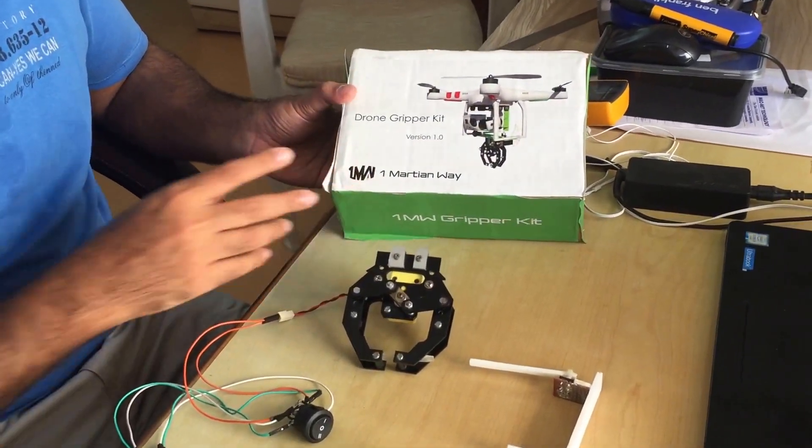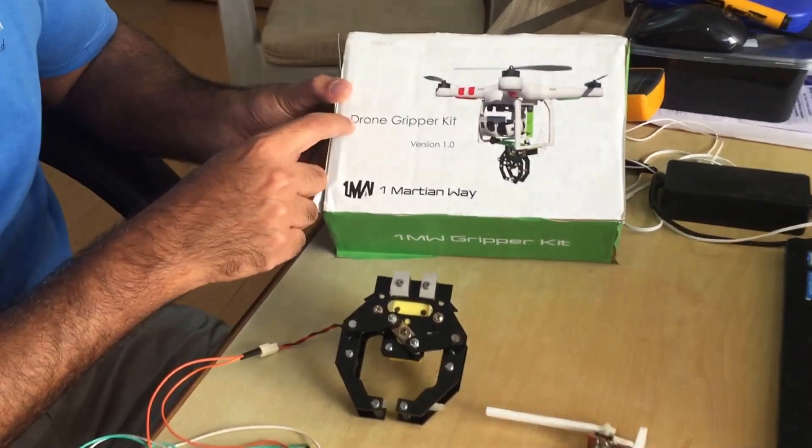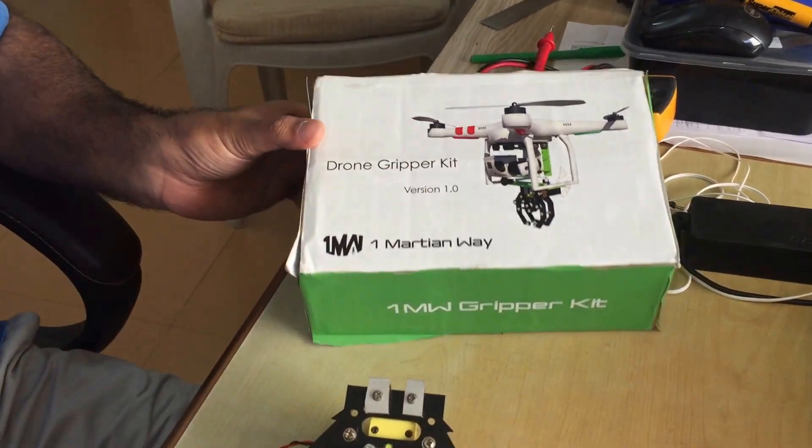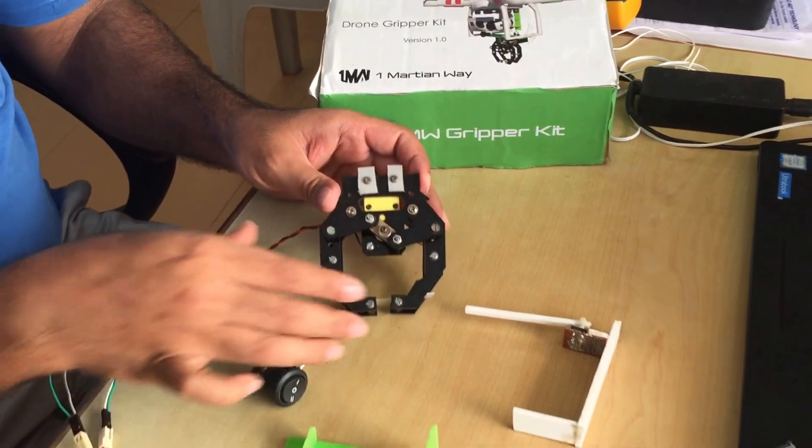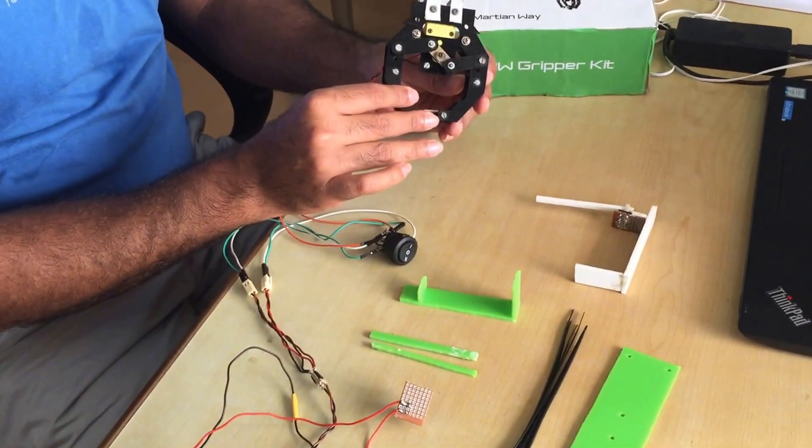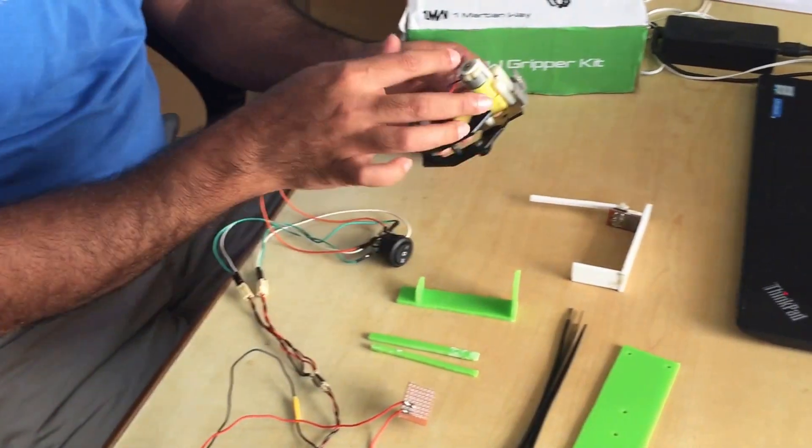Ok so welcome friends, this is what you get in the 1MW drone gripper kit version 1.0. What you get is the drone gripper itself which can move in open and closed position, so it's operated by a DC motor.